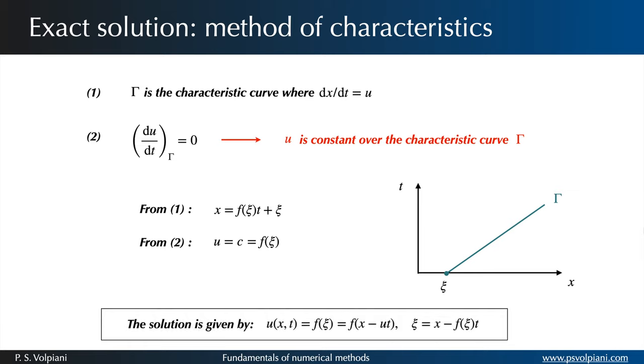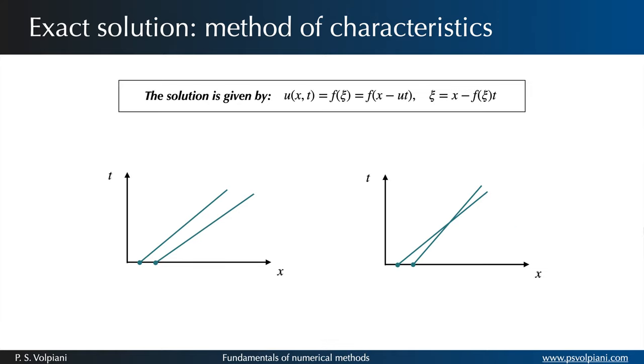Thus, the solution is of the following form. This is an implicit relation that determines the solution of the inviscid Burgers equation provided characteristics don't intersect. If the characteristics do intersect, then a classical solution to this partial differential equation does not exist and leads to the formation of a shock wave.